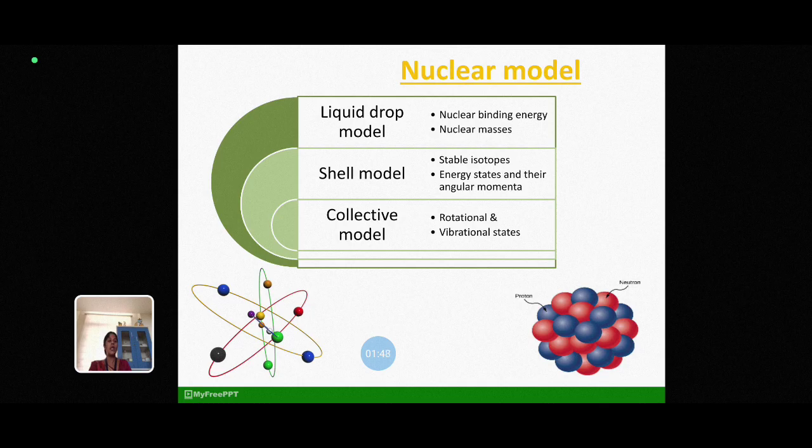The second one shell model which accounts for the existence of stable isotopes, energy states and angular momentum. At last, the collective model includes the rotational and vibrational states of the nucleons.